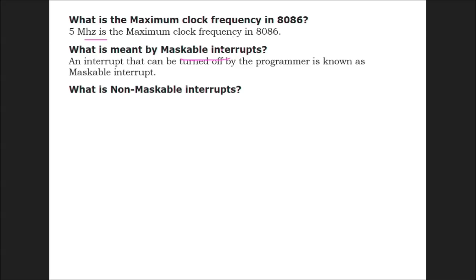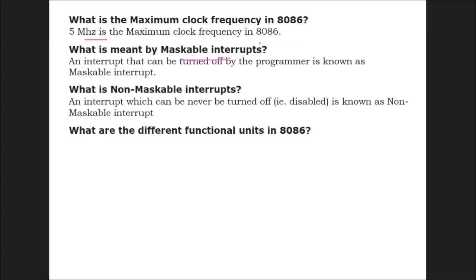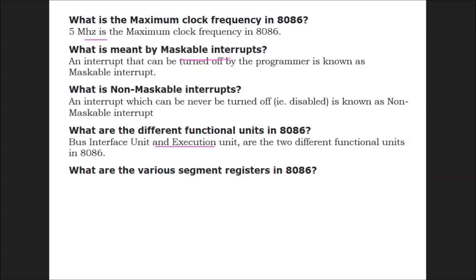What are non-maskable interrupts? An interrupt which can never be turned off is known as a non-maskable interrupt. What are the different functional units in 8086? Bus Interface Unit (BIU) and Execution Unit (EU) are the two different functional units in 8086.